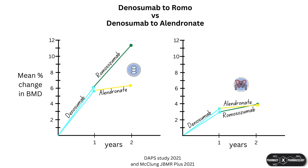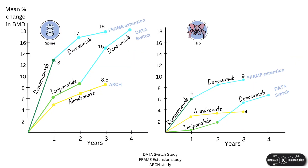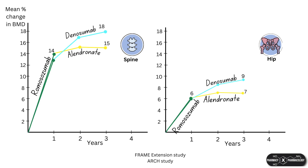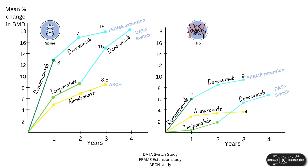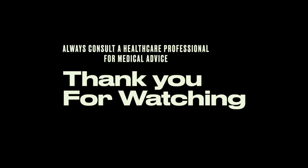Also, for short courses of denosumab, teriparatide and romosozumab are able to further increase BMD gains at the spine, but when transitioning from denosumab to teriparatide at the hip there may be a transient loss in BMD after one year, which seems to recover at around two years after the switch. BMD gains from anabolic therapy can be maintained when transitioned to a bisphosphonate, and even further increased in the case of denosumab. Please check out the other videos on osteoporosis if you haven't already. This video is not meant to be used as medical advice—always consult your own doctor for tailored healthcare advice.